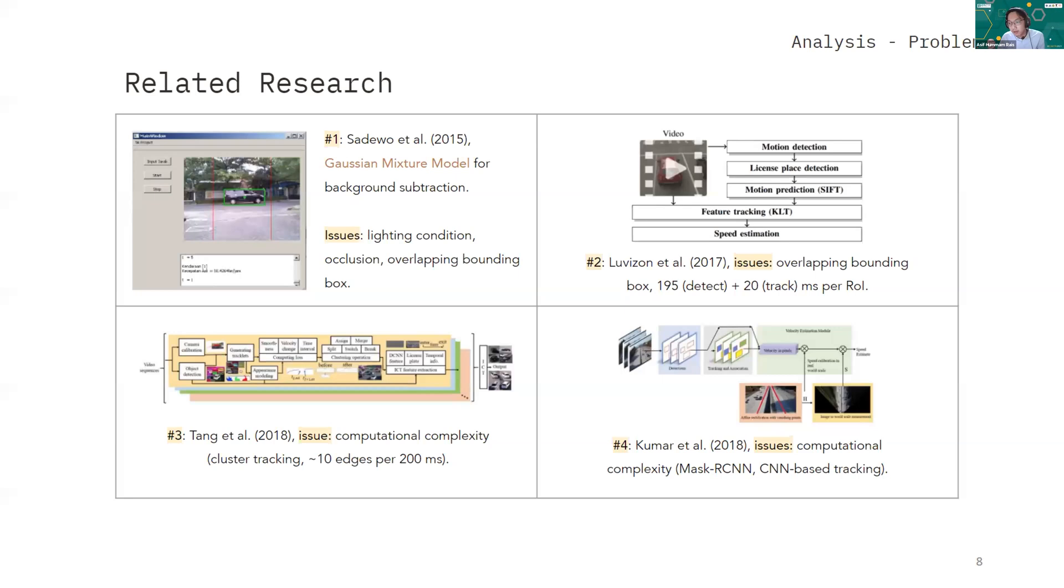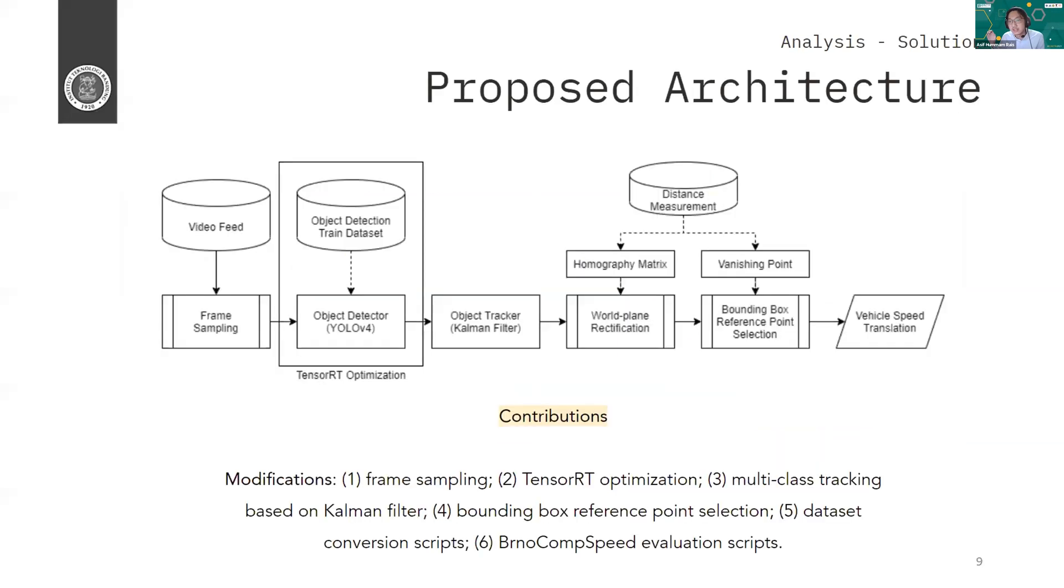And then we have some modifications. So the proposed architecture for our system, as you can see on the picture here, the proposed architecture is a modified version of Kumar's architecture. Here we use TensorRT optimization of YOLO. Then we change the CNN based tracking to Kalman filter based tracking. And then one important thing that we also employ is using frame sampling.